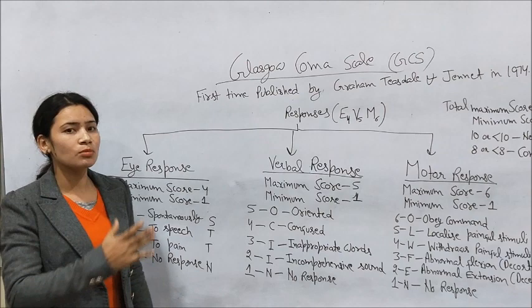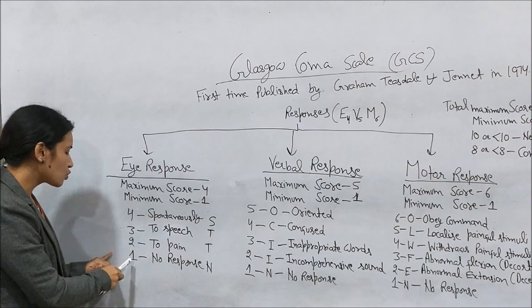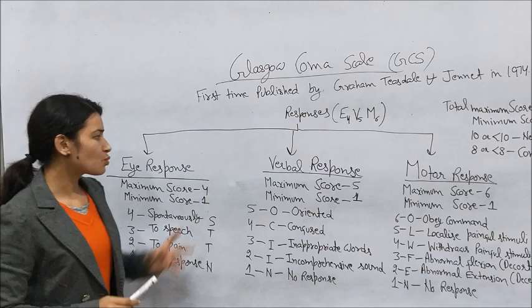If you apply pressure and the patient gives a response, you score accordingly. If there is no response at all, you give a score of one.